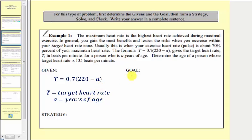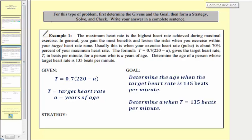Now let's define our goal. Our goal is in the last sentence. We want to determine the age of a person whose target heart rate is 135 beats per minute. Another way to say this is we want to determine A when T equals 135. So here's our goal.